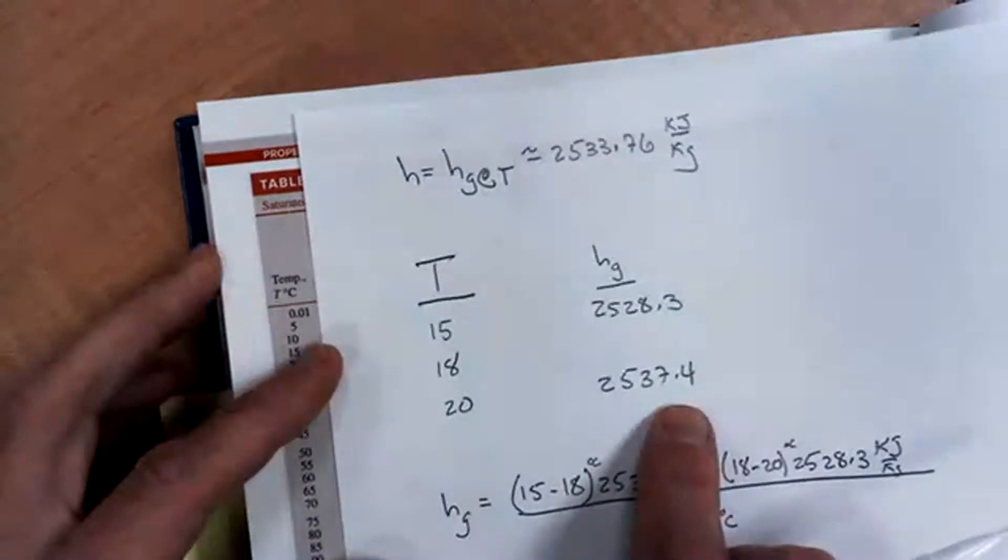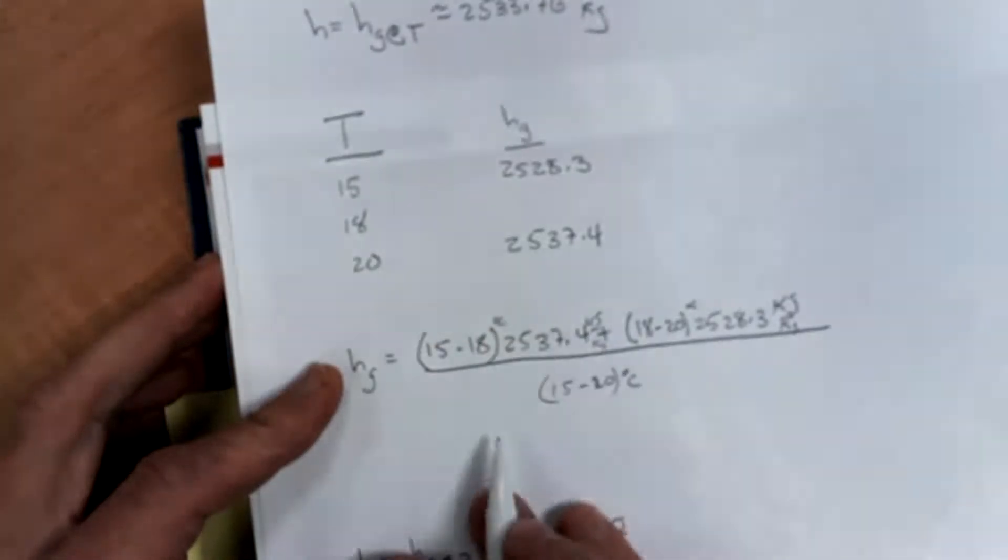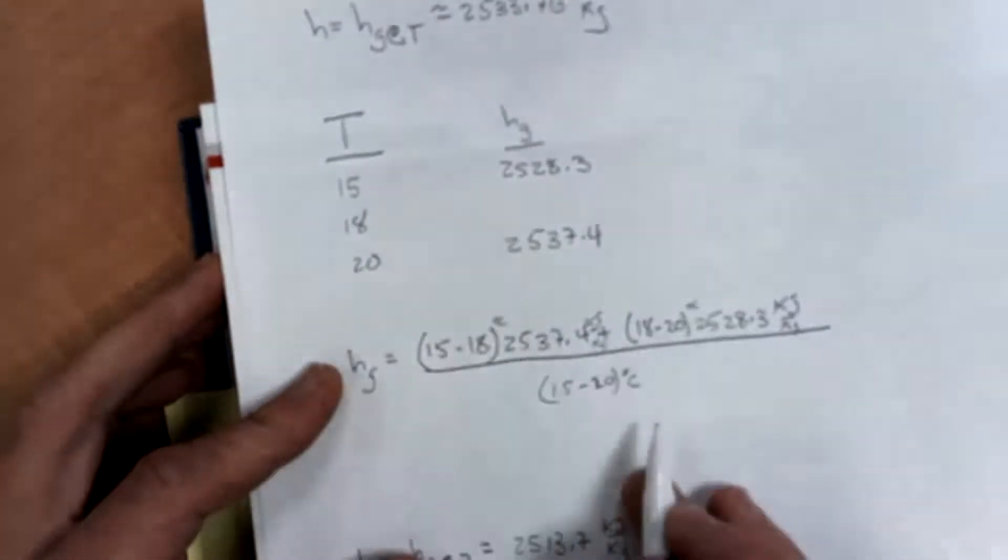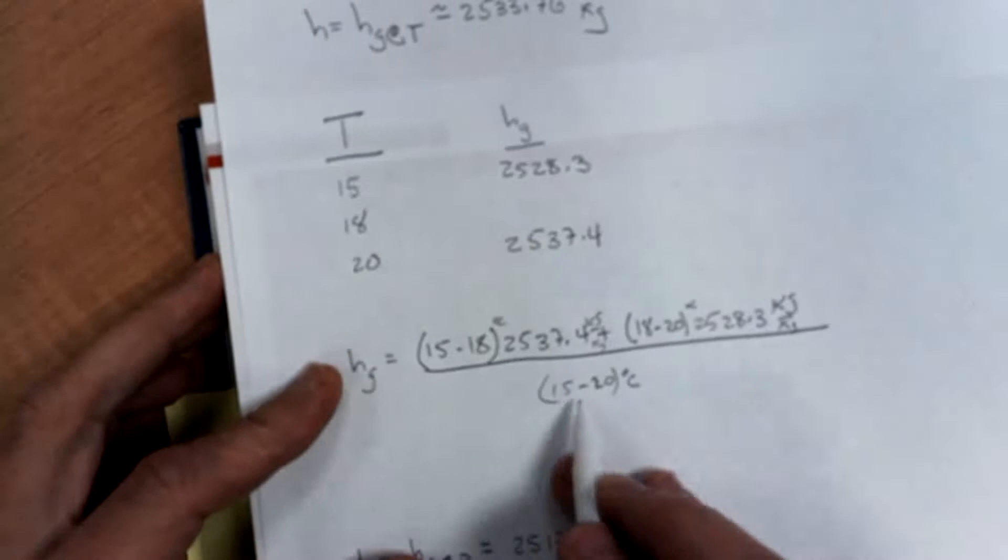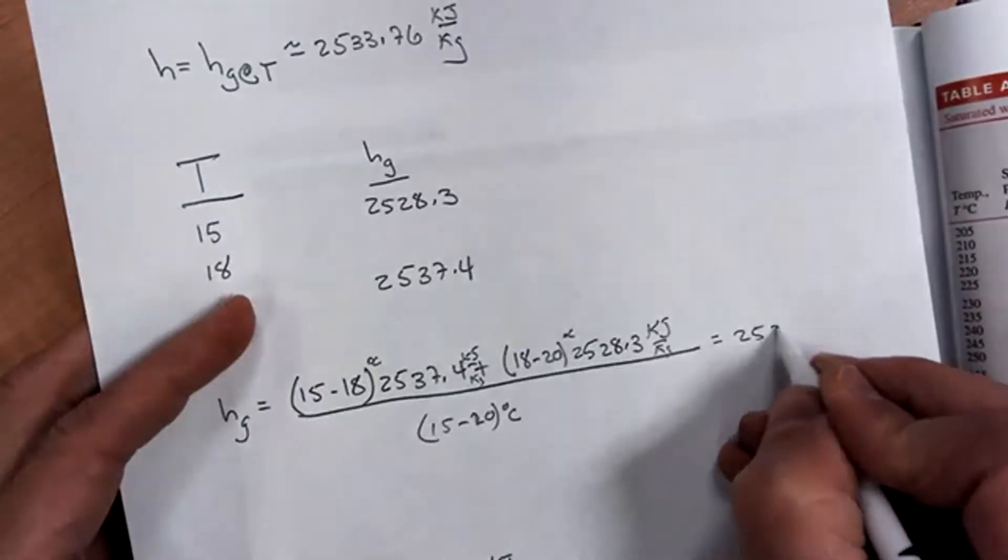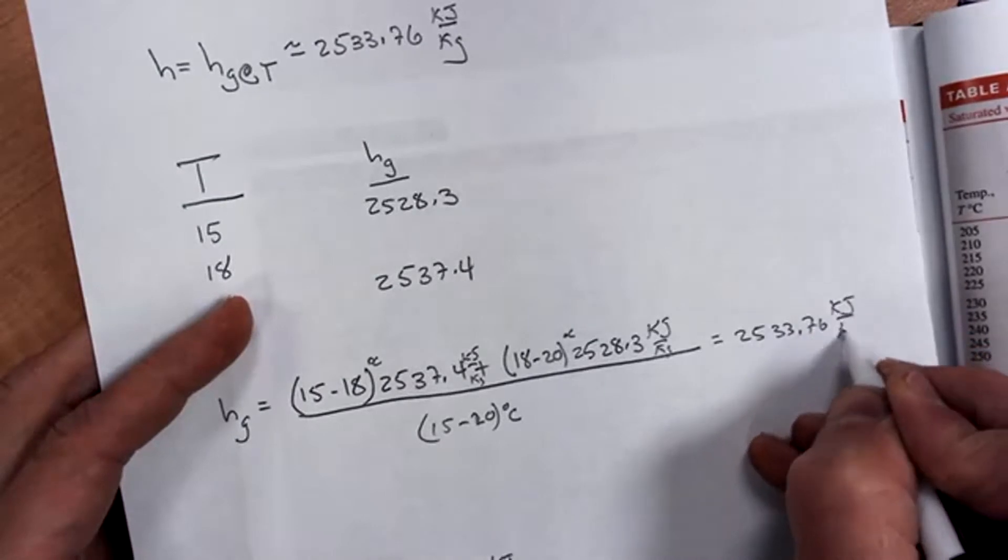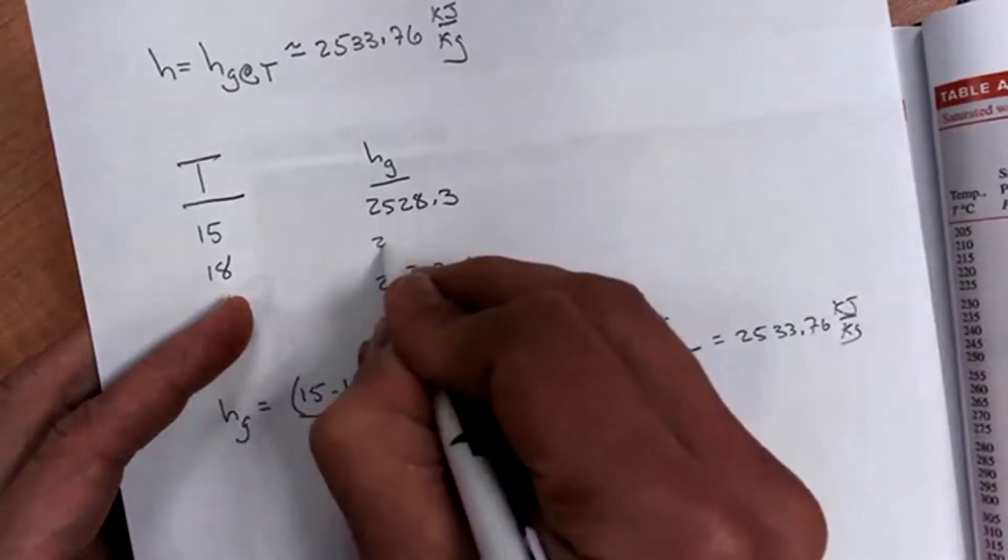So at 18 degrees Celsius, I can use this equation: 15 minus 18 times 2537.18 minus 20 times 2528.3 divided by 15 minus 20. And I'll get this 2533.76 kilojoules per kilogram, which would go here.